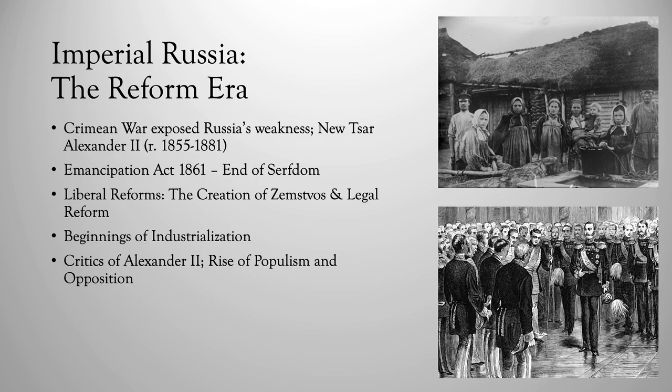This period is often referred to as the Reform Era of Imperial Russia, as their devastating loss in the Crimean War exposed many of Russia's weaknesses. The new czar, Alexander II, who ruled from 1855 to 1881, initiated a period of reform. After the Crimean War, it was clear that Russia had fallen behind Western European powers because of their low levels of industry.